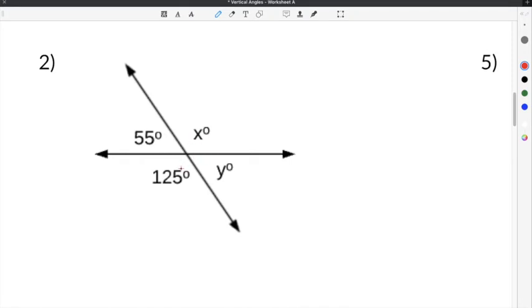We know that angles directly across from each other are vertical. So if this x is vertical with 125 degrees, we know that x has to be 125 degrees.